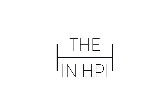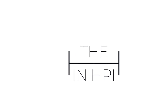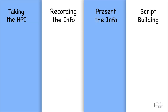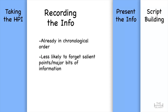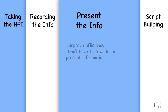Before we look a little deeper at that example, let's talk about some of the benefits to using the H in HPI method. Using this method allows for improved organization. It's also flexible across different cases. When recording the information, it's already in chronological order. You're also less likely to forget salient points and major bits of information.